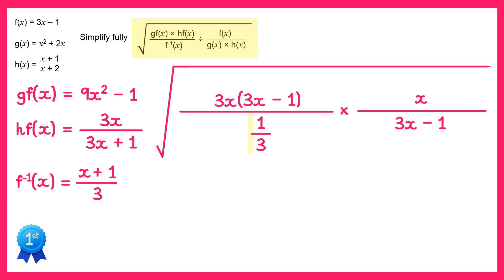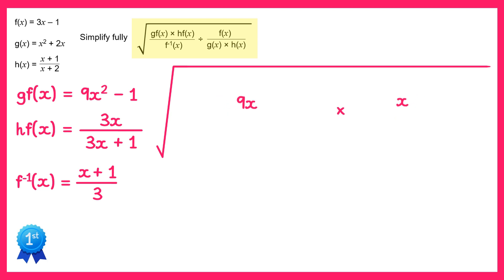Looking at the 1 over 3, dividing by 1 third is the same as multiplying by 3, so we can just multiply the numerator by 3. So instead of 3x we have 9x in front of the bracket. The 3x minus 1's can also cancel, so we remove those. We're left with 9x times x, which is 9x squared.